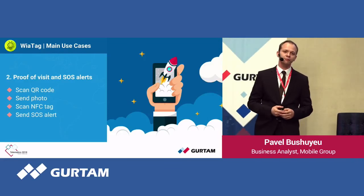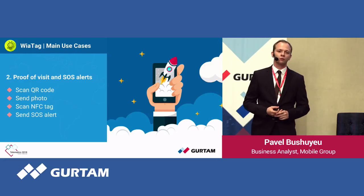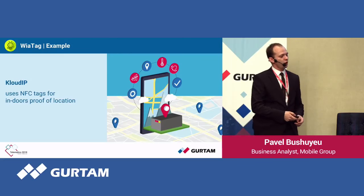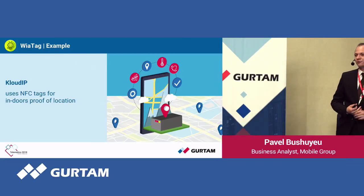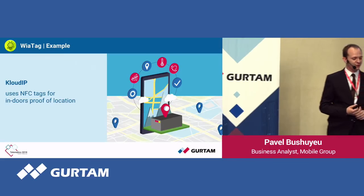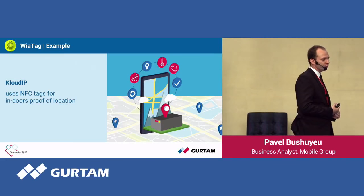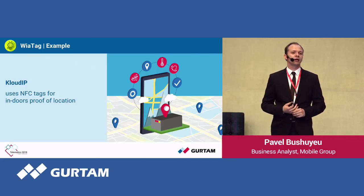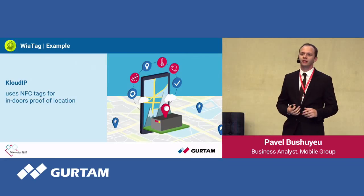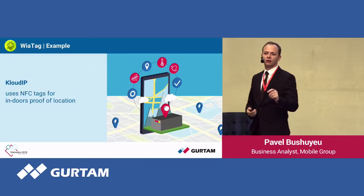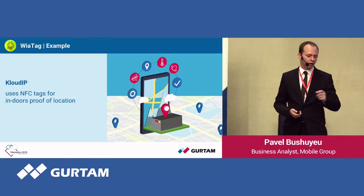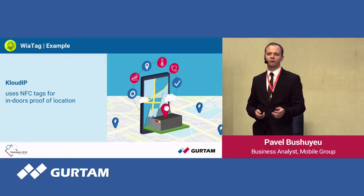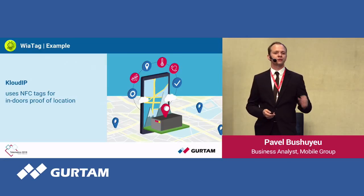With every message, we also send a timestamp and the latest known location of the device. An example of that would be Cloud IP, a partner from Sri Lanka, who employs this feature on an indoor project where they have security staff that needs to come to certain points alongside the perimeter of a safe area. The staff scan NFC tags, and that is how they prove that a certain person visited a certain location.